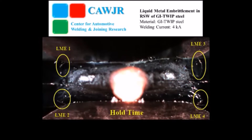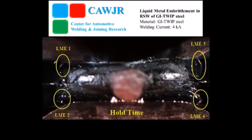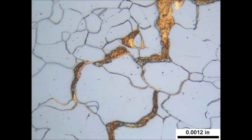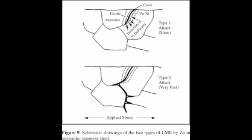Copper and copper alloys are susceptible to liquid metal cracking by mercury and lithium. The liquid metal atoms, when adsorbed on a susceptible metal or alloy, reduce the metal bond strength. Within the grain boundary regions of the susceptible metal, under tensile stress, cracks initiate and propagate rapidly along the grain boundaries.